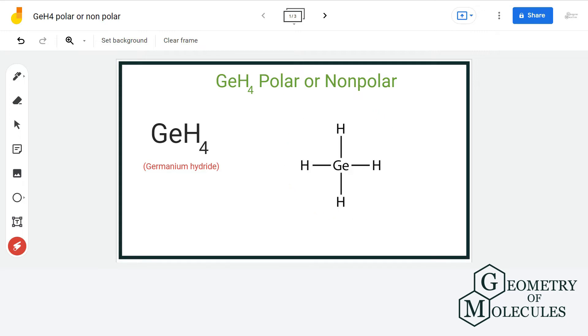This is the Lewis structure of GeH4, where germanium is forming four single bonds with hydrogen atoms. If we look at the electronegativity of germanium, it is 2.01, and that of hydrogen is 2.2. The difference is too low between the two atoms to induce any kind of polarity.